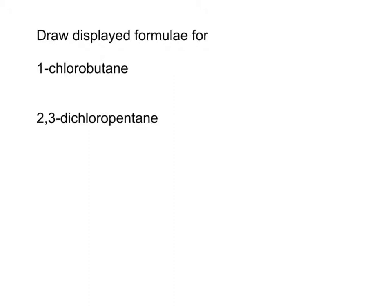Okay, now we're going to go around the other way. So here are the names. Let's try drawing the displayed formulae for these. So the first one, 1-chlorobutane. So it's a butane, so I'm going to have four carbons.